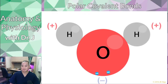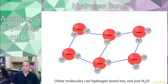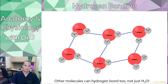Those polar covalent bonds exist because oxygen likes to hold on to electrons a little more than hydrogen does. With electrons spending more time near oxygen, oxygen becomes slightly negative, thus making each hydrogen slightly positive. And hydrogen bonding refers to these partial negative and partial positive charges being attracted to each other. In the case of water, the slightly positive hydrogen is attracted to other molecules that are slightly negative.